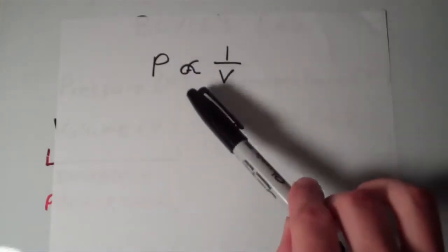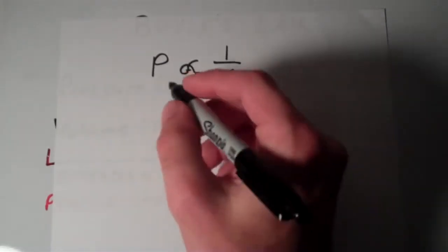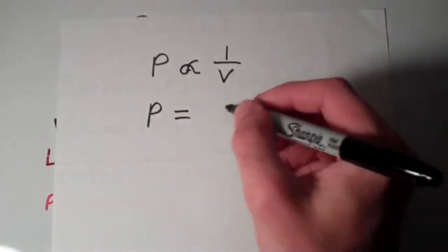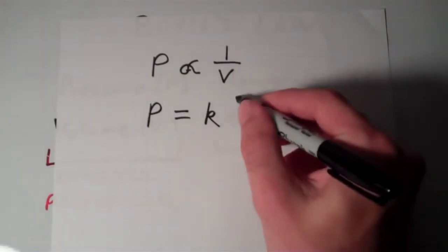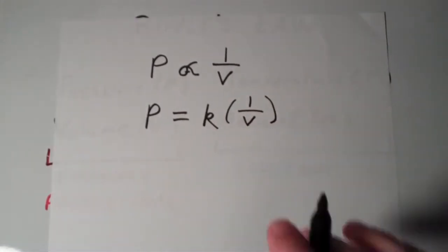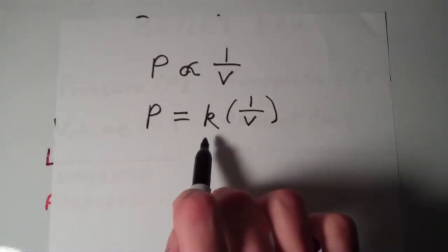But I don't really like this proportional sign. I'd rather have a real equation. So the way that we get rid of this and turn this into an equal sign is to just say that the pressure, P, is equal to some constant of proportionality that we'll call K times 1 over V. So we no longer have a proportional symbol. We now have an equal sign, and we now have this constant of proportionality.